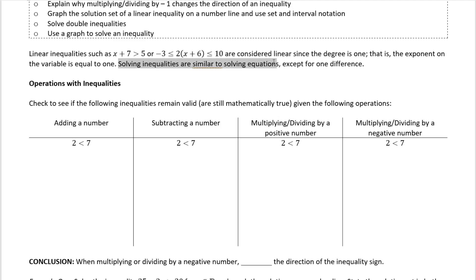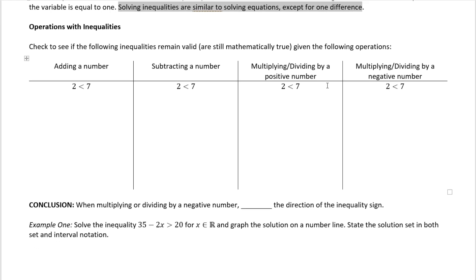Solving linear inequalities is similar to solving equations except for one key difference. With inequalities, we can do the same operations as with equations, with one exception. Let's check: if we add a positive 5 to both sides of 2 < 7, we get 2 + 5 < 7 + 5, which gives 7 < 12. That statement checks out — it's still true.